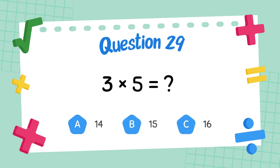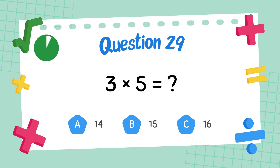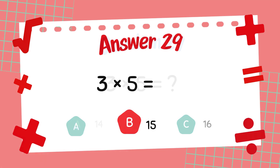What is three times five? The answer is fifteen.